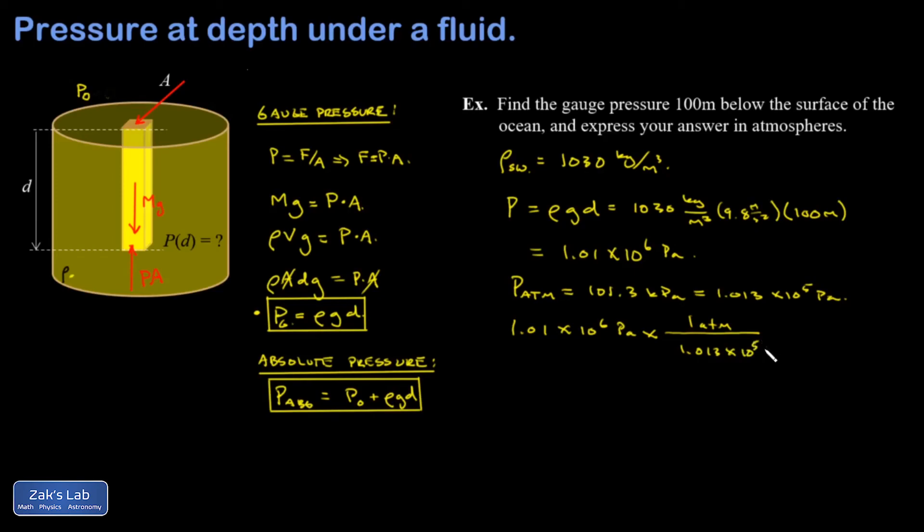And I get 9.97 atmospheres of pressure. So this is a testament to how much more dense water is than air. We are at the bottom of an ocean of air that extends all the way to space and it only generates one atmosphere of pressure, but if you just go 100 meters below the surface of the ocean you get 10 times that much pressure already.